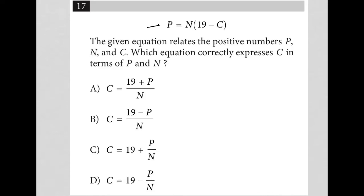This question starts off by providing us with this equation: P equals N times parentheses 19 minus C. The given equation relates the positive numbers P, N, and C. Which equation correctly expresses C in terms of P and N?